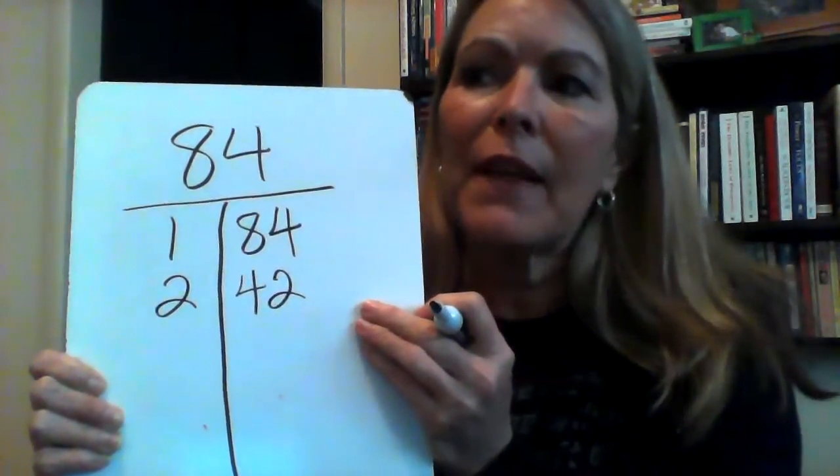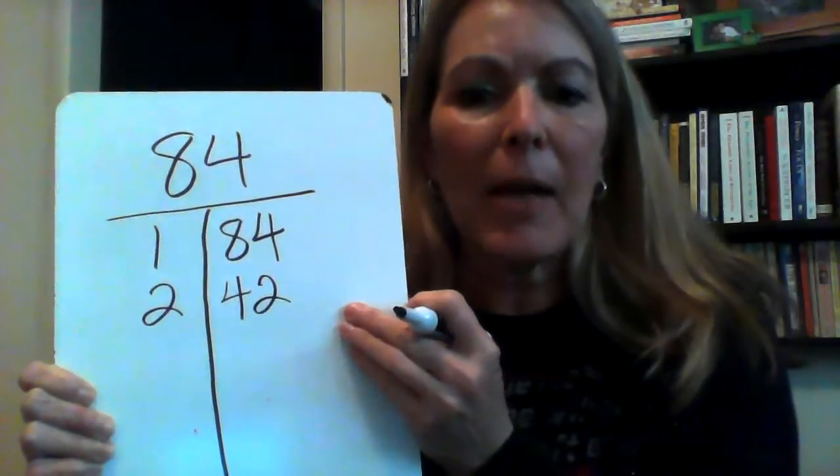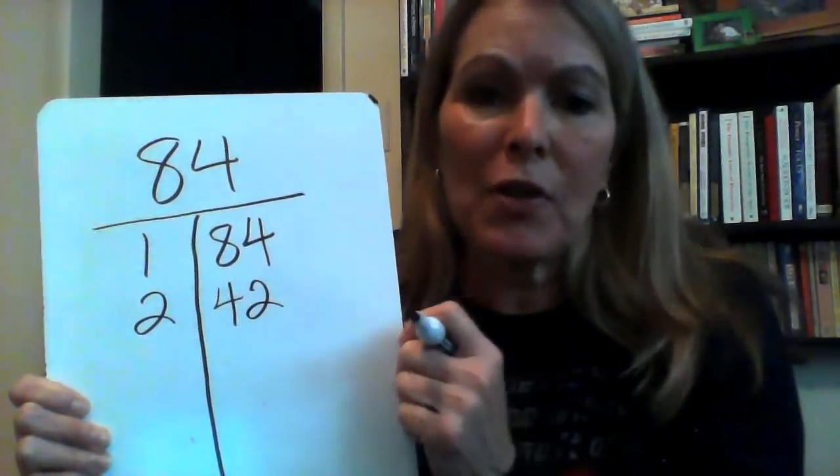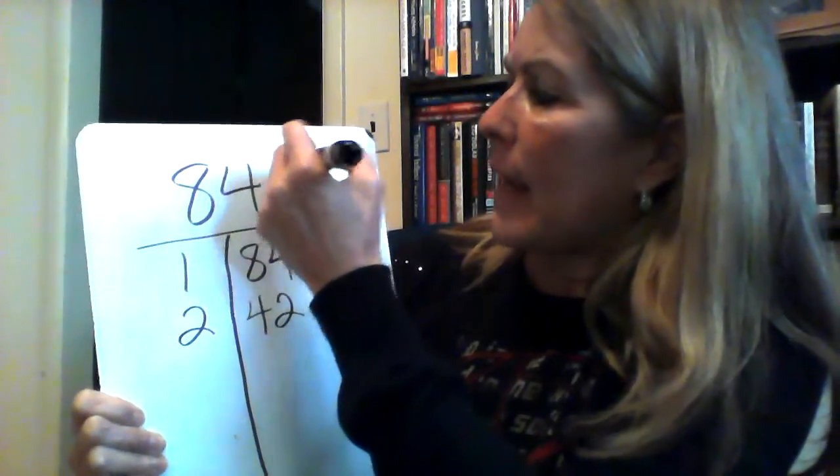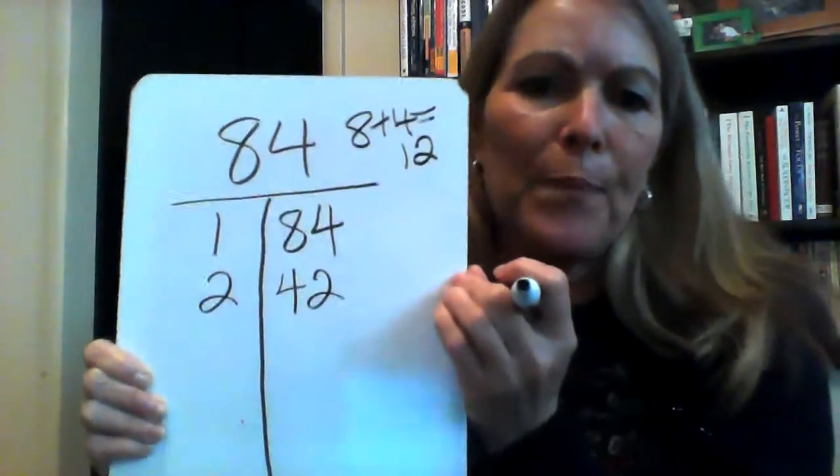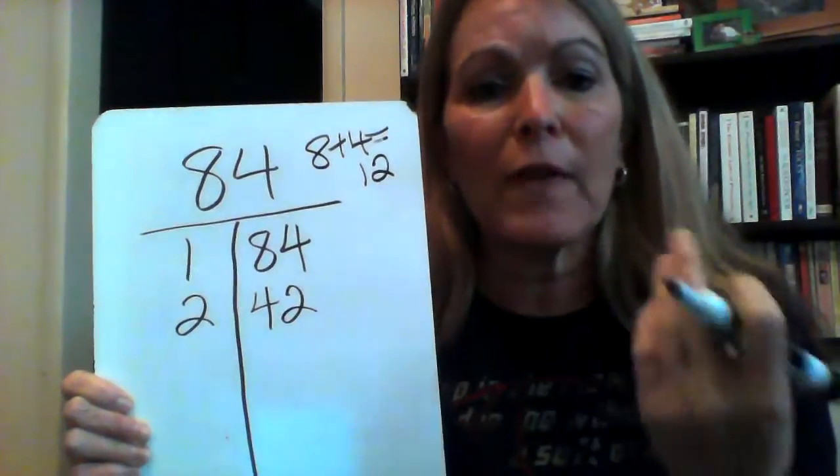The next factor that I need to look for is going to be a 3. And a 3 is extremely easy to figure out for any number. All you have to do is add the digits together. And since the digits for 84 are 8 and 4, I'm going to add those together, and my sum is 12. So that tells me that 3 is going to be a factor because 12 is a multiple of 3.